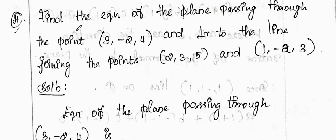Find the equation of the plane passing through the point (3, -2, 4) and perpendicular to the line joining the points (2, 3, 5) and (1, -8, 3).